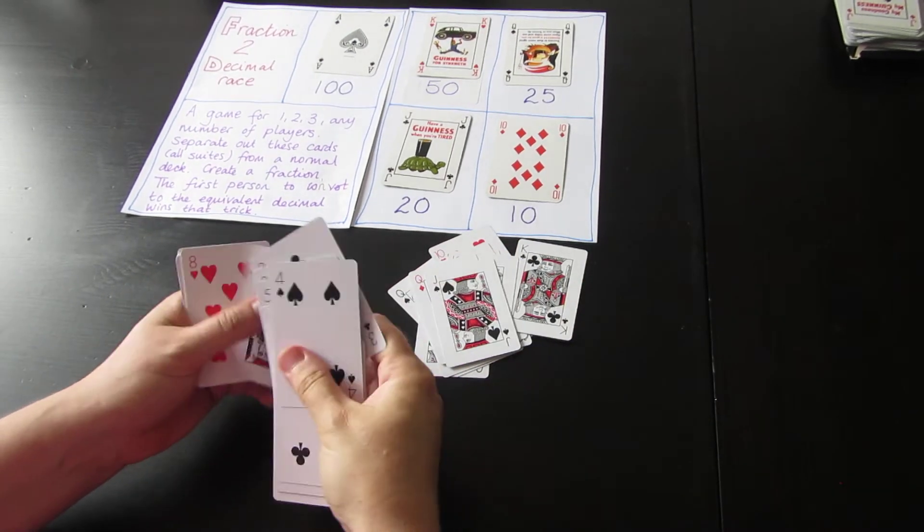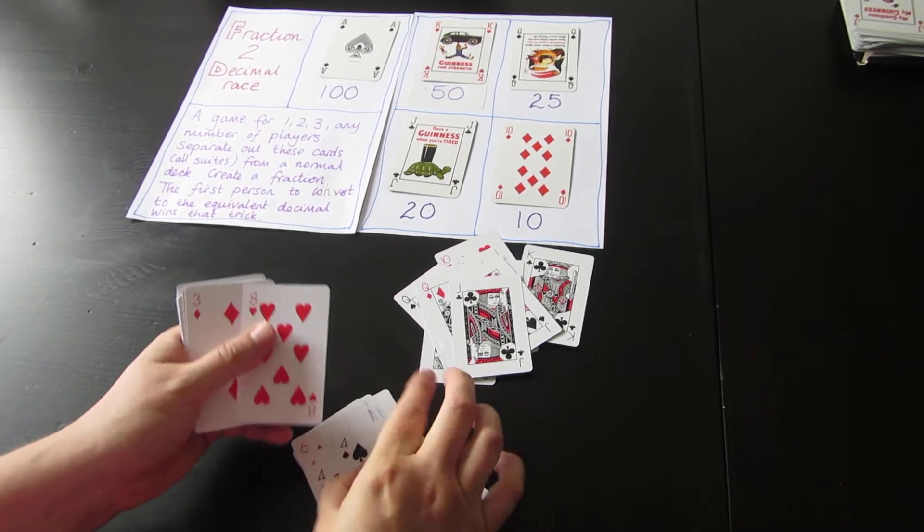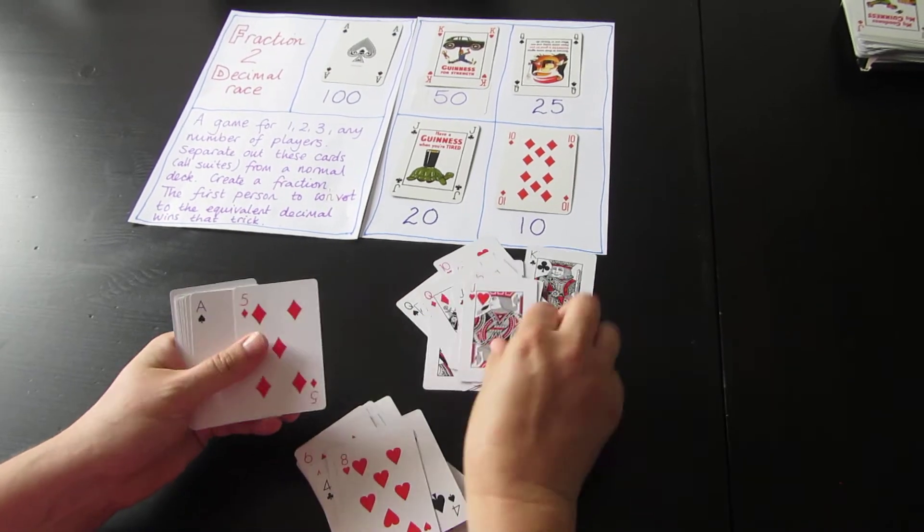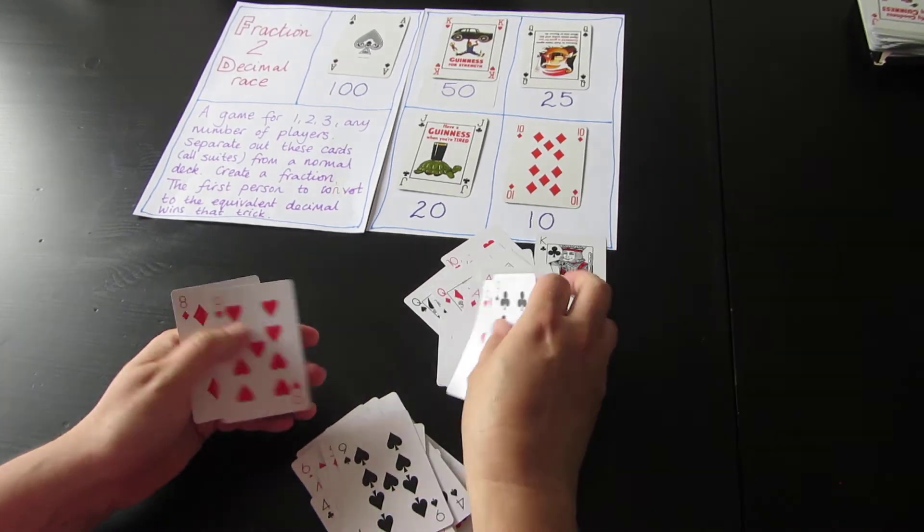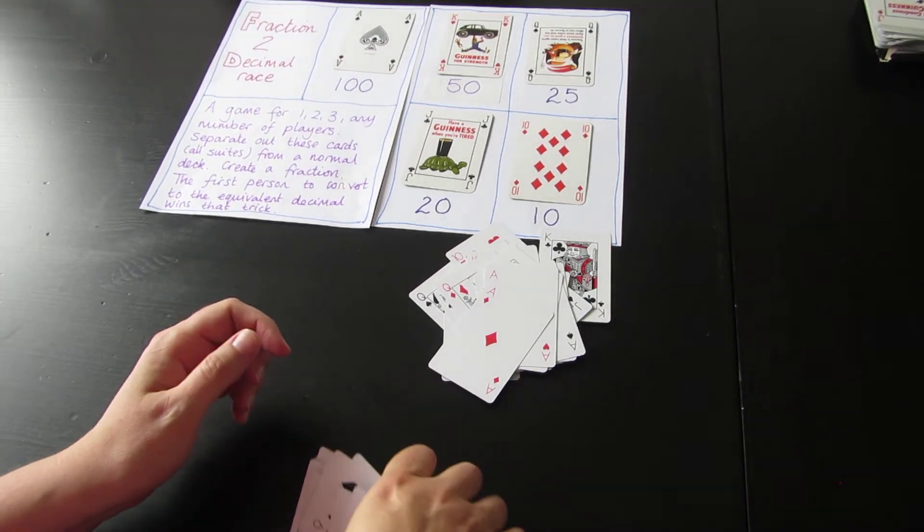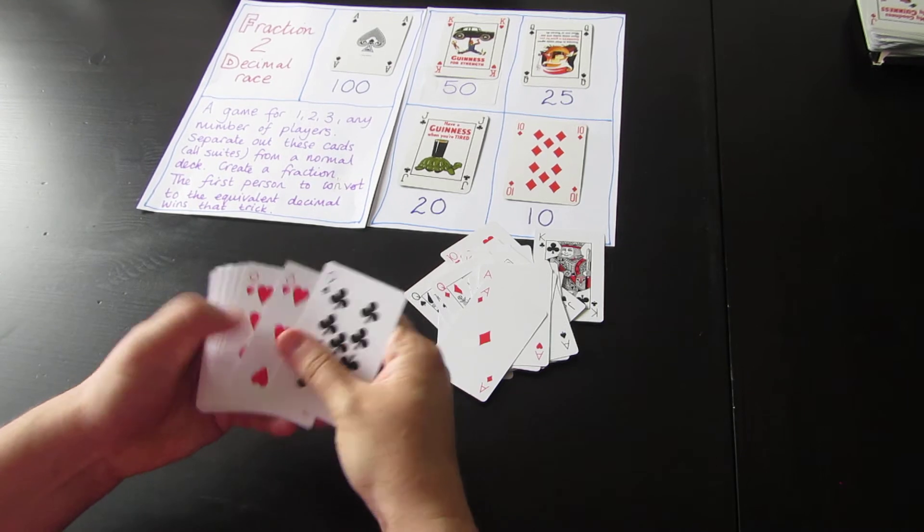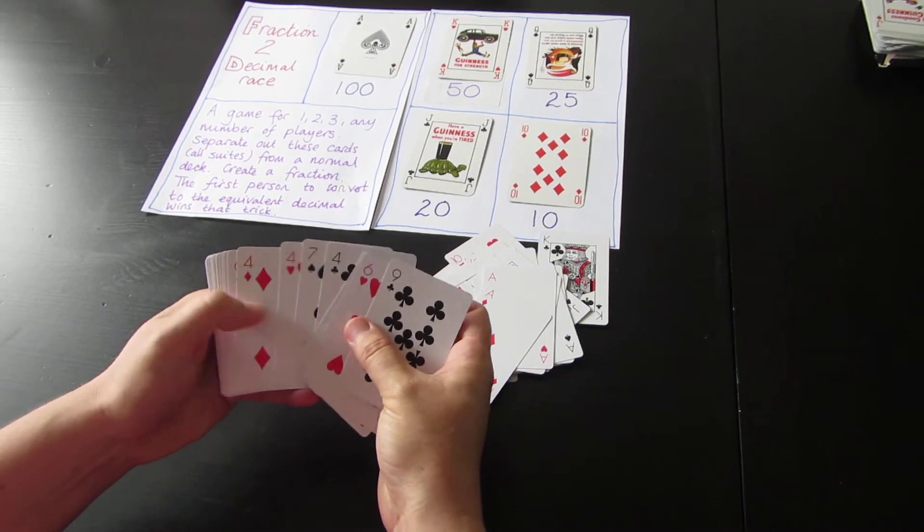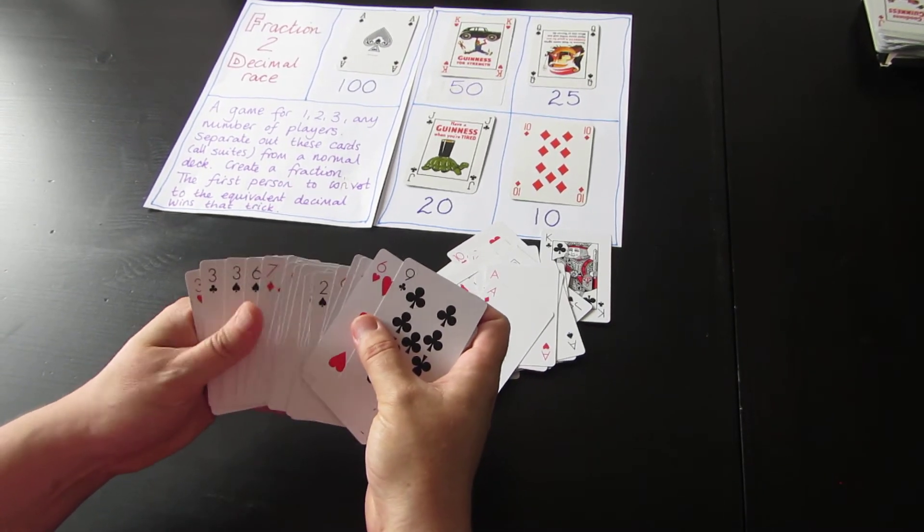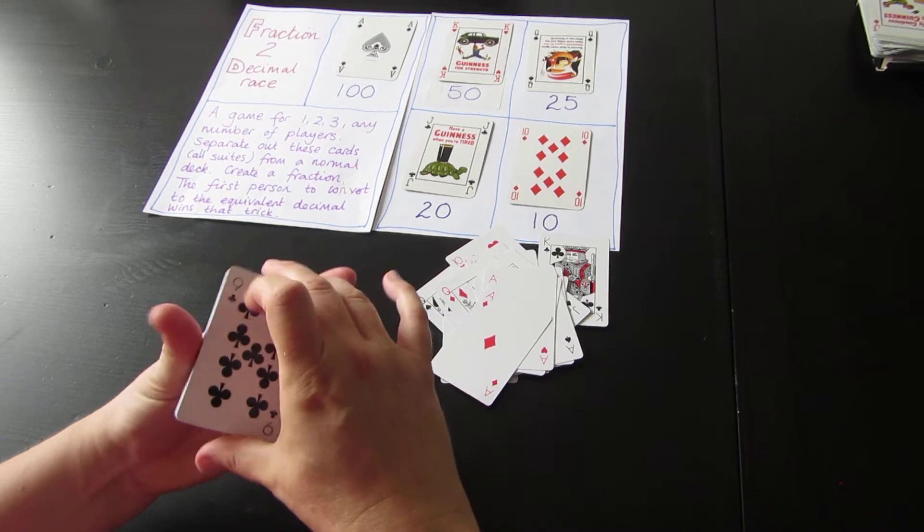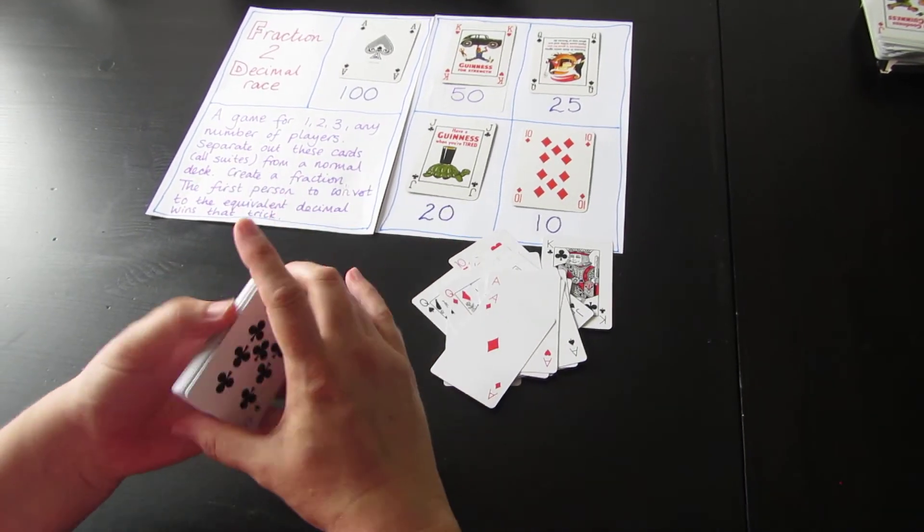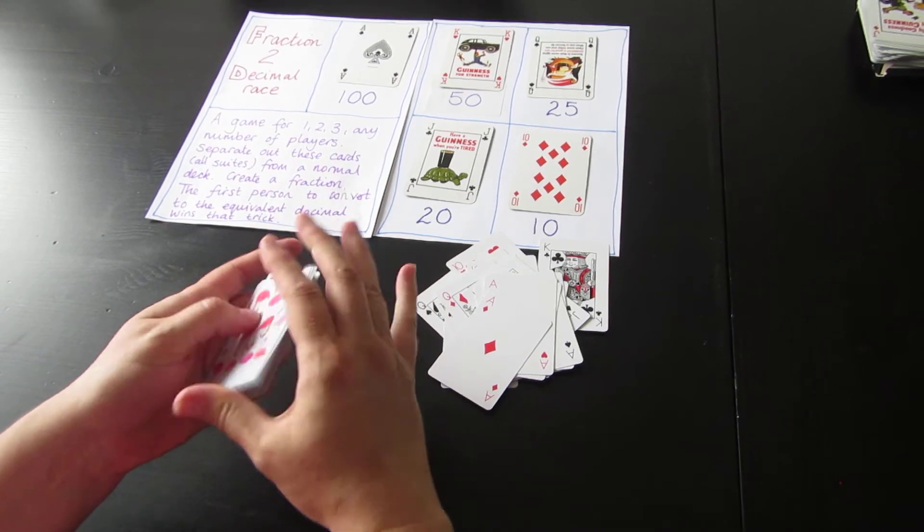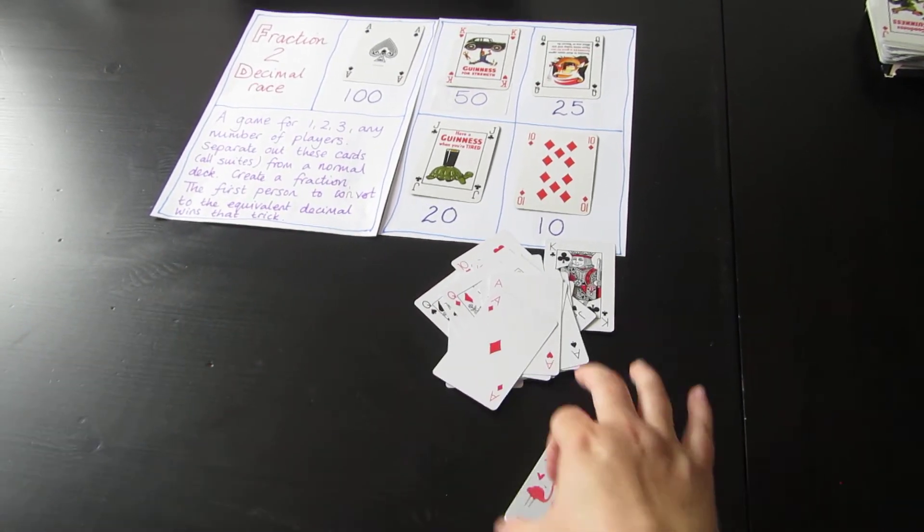That looks good. I'm just going to have a quick flick through. It doesn't overly matter if you haven't got all of them, but it does work best if you can. These cards, the cards numbered 2 to 9, give them a little extra shuffle - they are going to be your numerator.